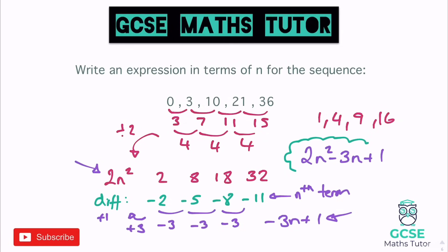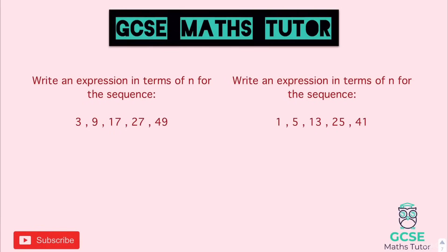So you've just got to be very careful when you do these. Find your second difference. Halve it for your n squared term as normal. And then when you find your difference, if it's not a constant difference, you're going to have to work out the nth term of that sequence on its own — and that's what you add on to your n squared or your 2n squared. So here's a couple for you to have a go at. Pause the video and we'll go over the answers in a sec.